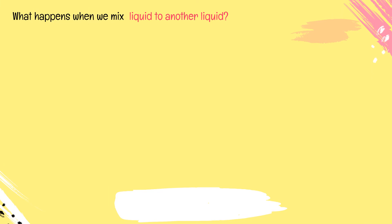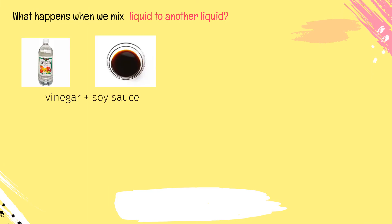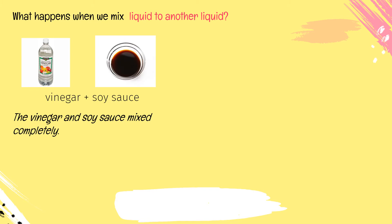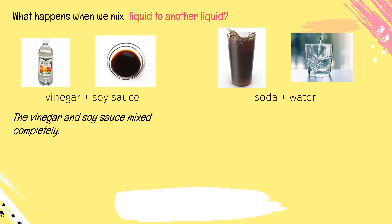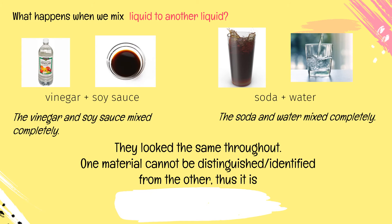What happens when we mix liquid with another liquid? Just like when we mix vinegar and soy sauce — they mix completely. How about mixing soda and water? The soda and water mix completely; they look the same throughout. One material cannot be distinguished or identified from the other, thus it is a homogeneous mixture.